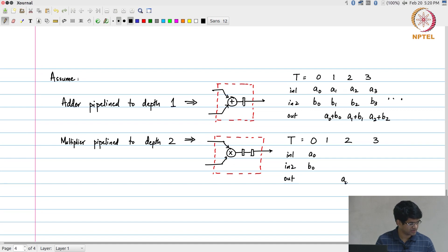I get it here, but I can give a1 and b1 here and the output will come here. I can give a2, b2 here, output will come here at time 4 and so on.